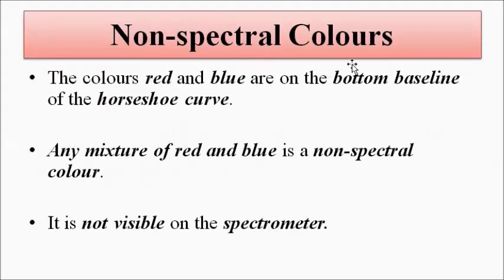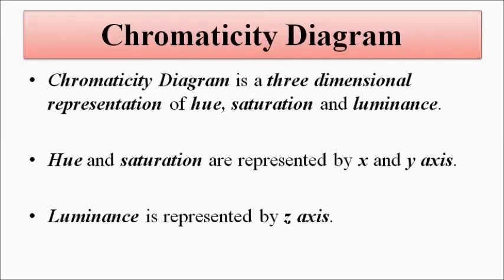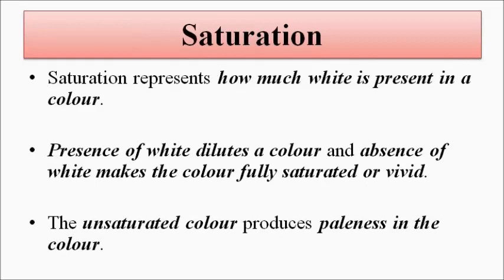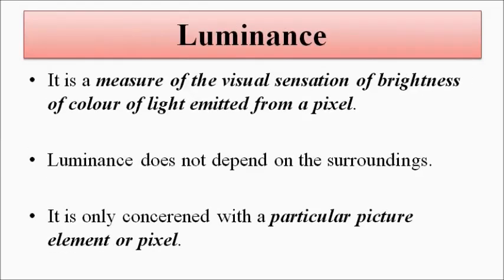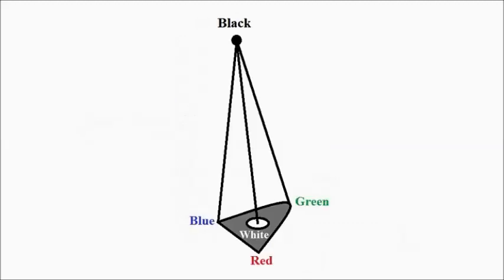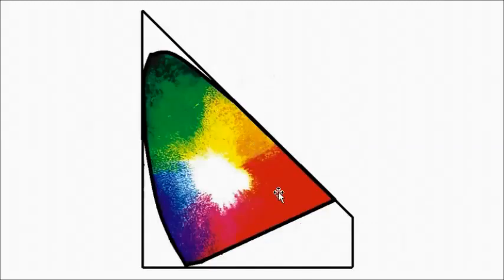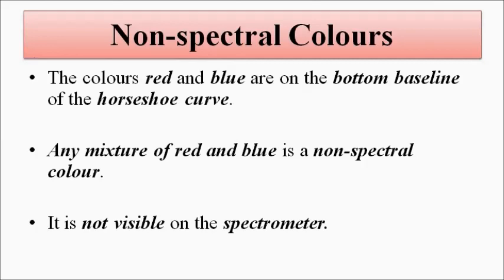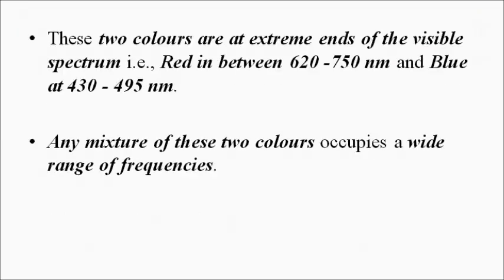So here we have discussed the chromaticity diagram taking into account the three separate features of colored light: hue, saturation, and luminance — at both the 2D and 3D levels — and all the intermediary colors formed from the primary colors, as well as spectral and non-spectral colors. I hope you like this video. Please subscribe to the Engineering Tutorial channel for more such videos related to engineering, science, and technology. Have a great day, thank you very much.